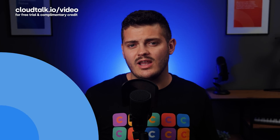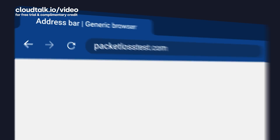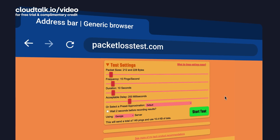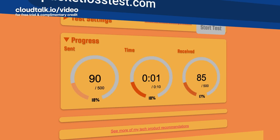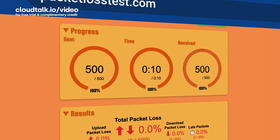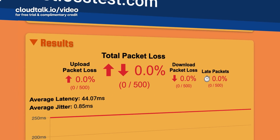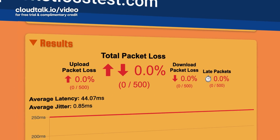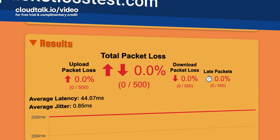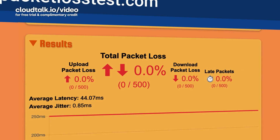We'll look at two ways you can do this. Option one is to visit a site like packetlosstest.com. Don't get intimidated by the options you see when you open the page — just leave everything at default and click Start Test. Once done, you'll see the packet loss percentage, average latency, and average jitter. You're looking for 0% in the first, and ideally you want to see double digits at most in the other two.